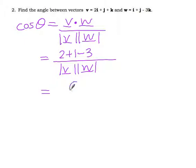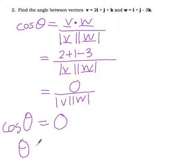Okay, so we've got 0 over this, which is just equal to 0. How do I find theta? Inverse cos. Inverse cos of 0, which is? Oh, 90 degrees. 90 degrees.